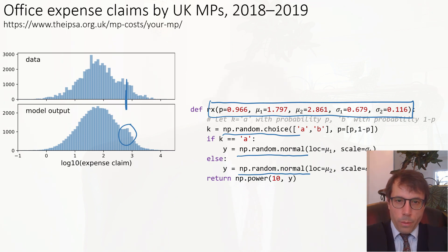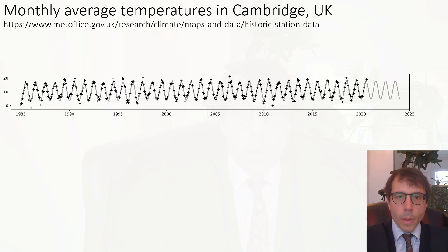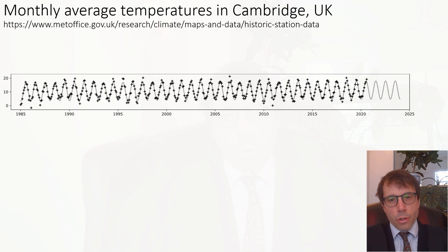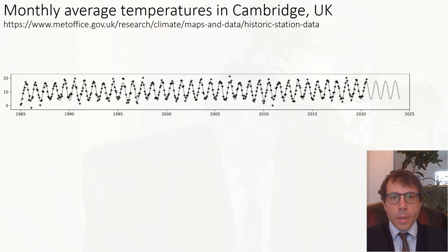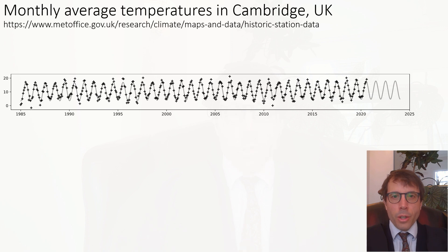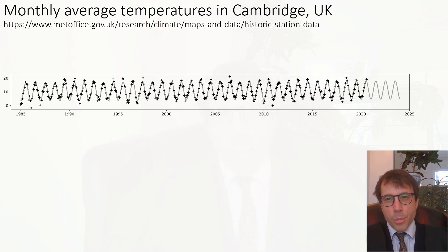On to another model, this one for climate change. In this plot, the dots show monthly average temperatures measured at a weather station in Cambridge, and the grey line shows a fitted model. The model I've used here has a sinusoid plus a long-term trend. Crucially, the model has one more ingredient: it includes a model term for noise. The whole point of a probability model is that it can describe noisy data. If you're a physicist like Newton or Einstein, you want nice beautiful equations that you can solve exactly. But if you're a data scientist, you're working with noisy data, and so you need a model that can talk about noise.